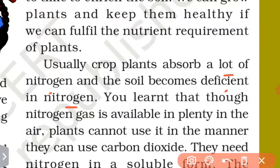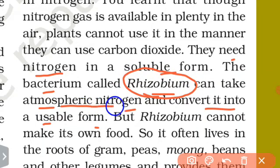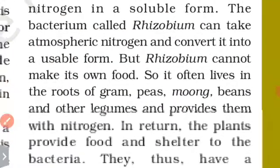You learn that although nitrogen gas is available in plenty in the air, plants cannot use it directly. Certain bacteria can take atmospheric nitrogen and convert it into a usable, soluble form. This helps the plant to absorb nitrogen. This is done by Rhizobium bacteria, rather than by the plant itself.